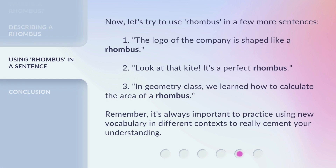Now, let's try to use rhombus in a few more sentences. 1. The logo of the company is shaped like a rhombus. 2. Look at that kite — it's a perfect rhombus. 3. In geometry class, we learned how to calculate the area of a rhombus. Remember, it's always important to practice using new vocabulary in different contexts to really cement your understanding.